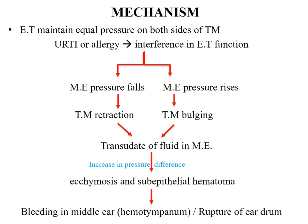The mechanism of barotrauma: the eustachian tube maintains equal pressure on both sides of the tympanic membrane, so gas must move freely between the nasopharynx and the middle ear. However, when an upper respiratory tract infection, allergy, or any other mechanism interferes with eustachian tube functioning during changes in environmental pressure, the pressure in the middle ear either falls below ambient pressure causing retraction of the tympanic membrane, or rises above it causing bulging.